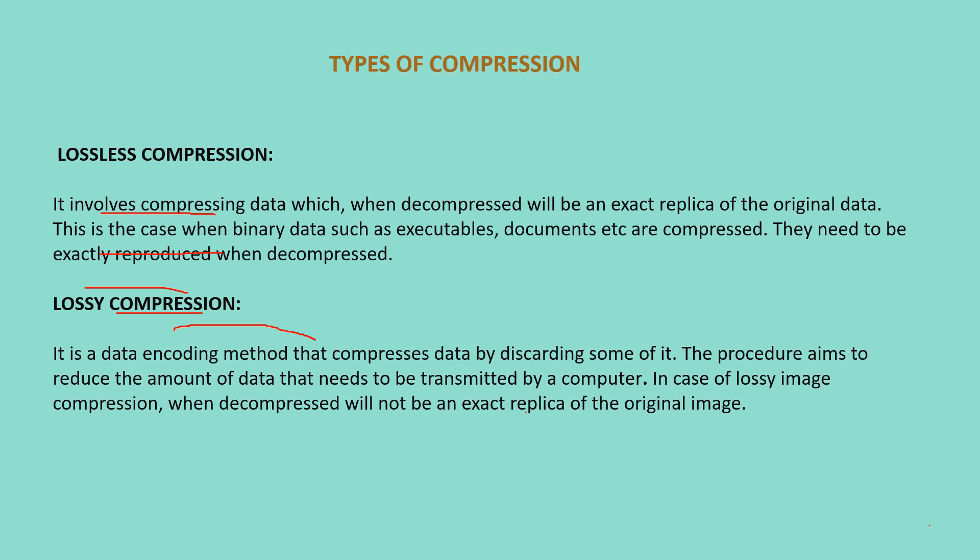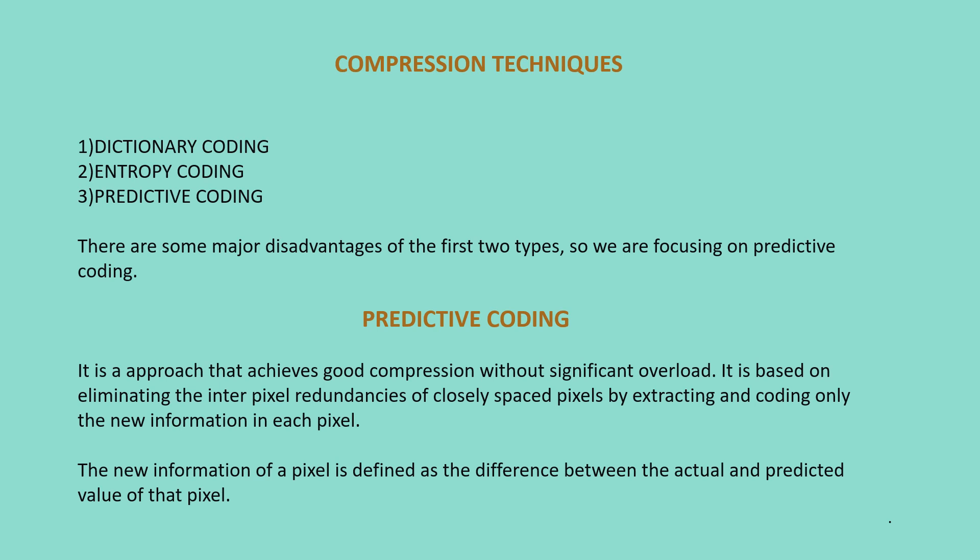For lossless image compression, we are using predictive coding. Compression techniques are of three types: dictionary coding, entropy coding, and predictive coding. There are some major disadvantages of the first two types, so we are focusing on predictive coding, which is a simpler technique. Predictive coding is an approach that achieves good compression without significant overload. It is based on eliminating the interpixel redundancies of closely spaced pixels. The new information of a pixel is defined as the difference between the actual and predicted value of that pixel.